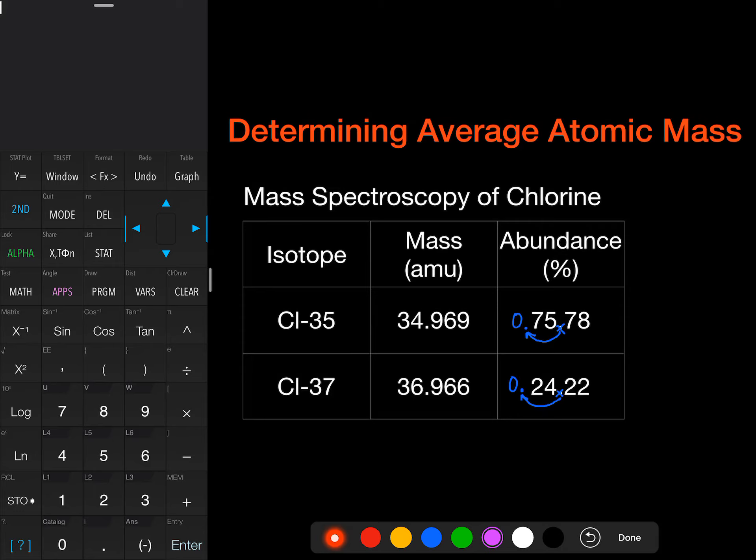Now we're going to multiply the mass times the abundance for each one. So 34.969 times 0.7578, we're going to get 26.4995. That'll be plenty of place values for us.